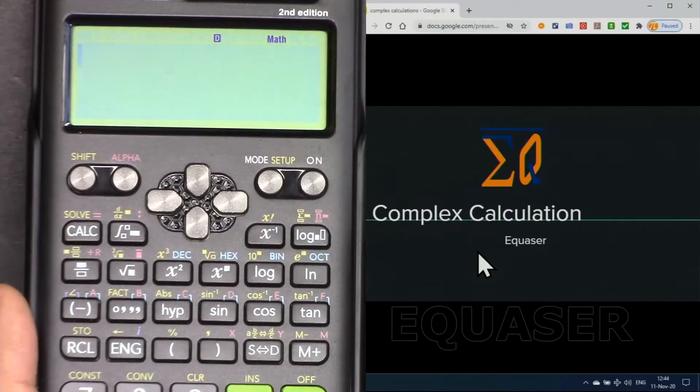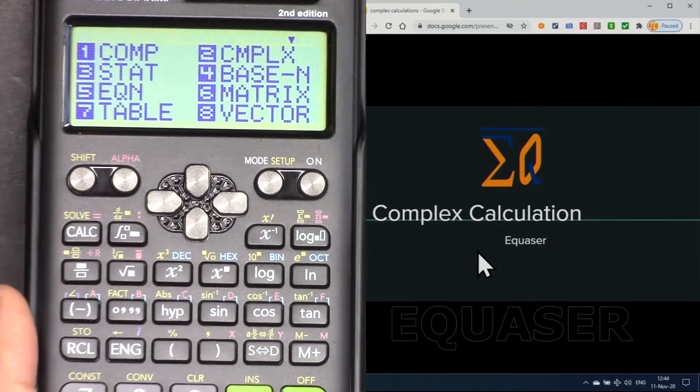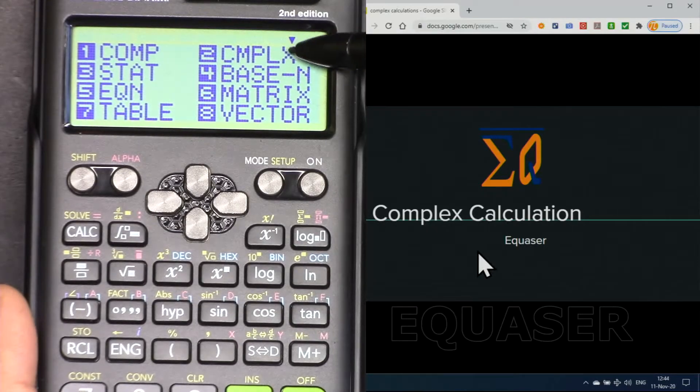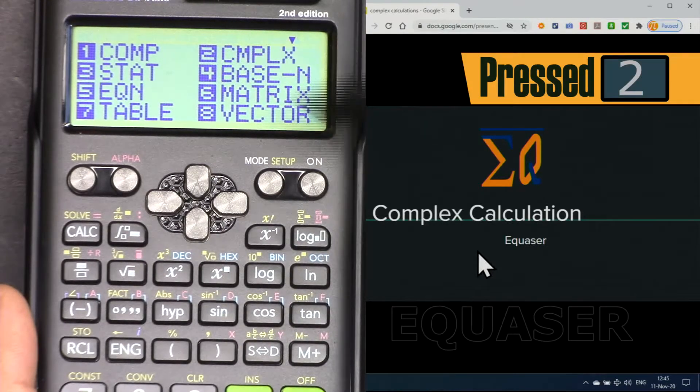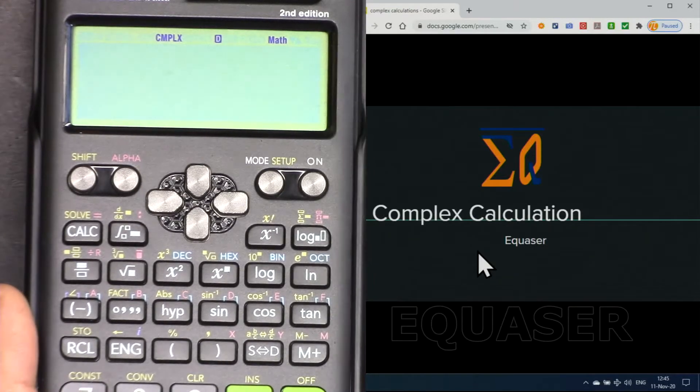To start using this calculator for complex calculation, press mode and from this menu, complex number, number two. Now you see here complex, so you know all the values that you have are in complex.